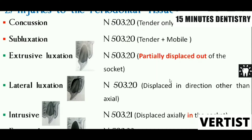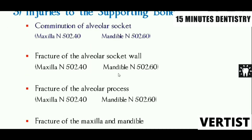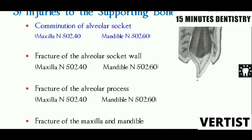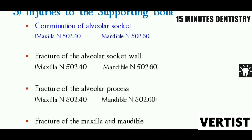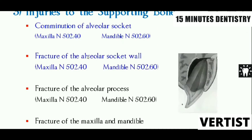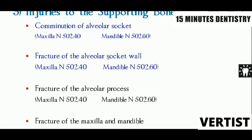Lateral luxation means displacement of the tooth in any direction other than the axial — it could be labial, palatal, mesial, or distal. Then intrusive luxation, where the tooth has been displaced inward into the socket. The most severe form is avulsion, where the tooth has completely come out of the socket. Coming to the third subcategory — injuries to the supporting bone — comminution of the alveolar socket means it has been completely crushed, which generally occurs with intrusive injuries. Fracture of the alveolar socket wall may occur facially or palatally.